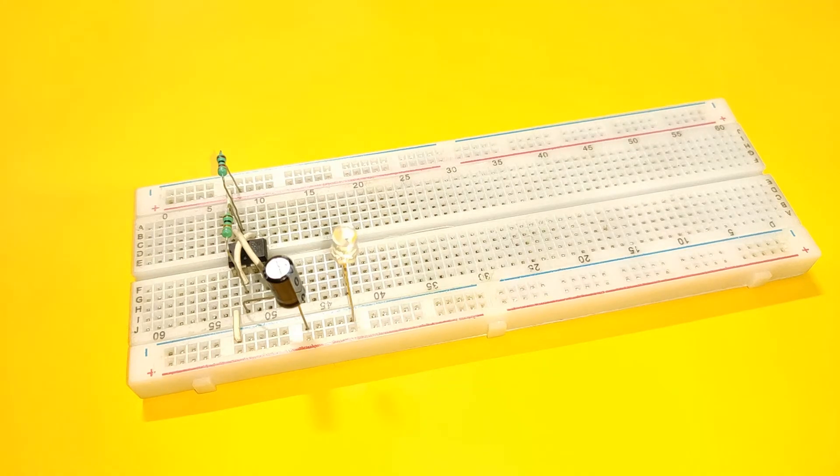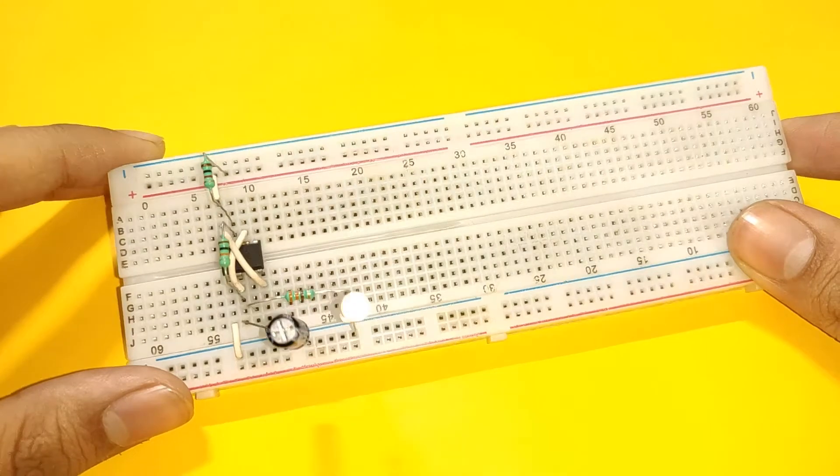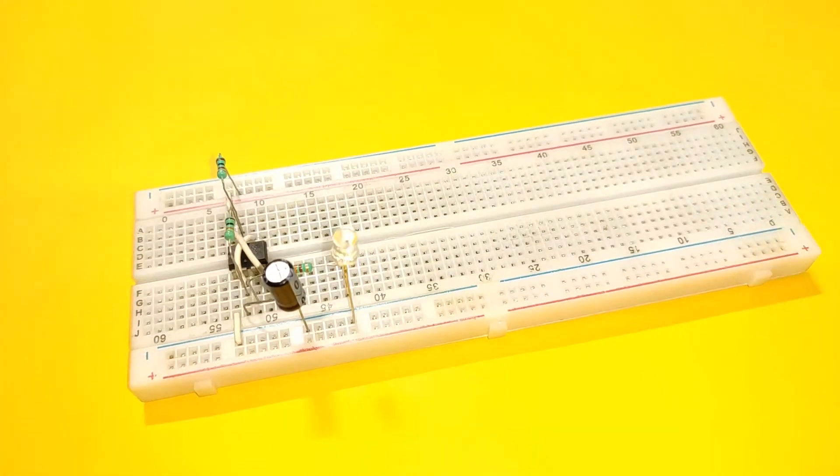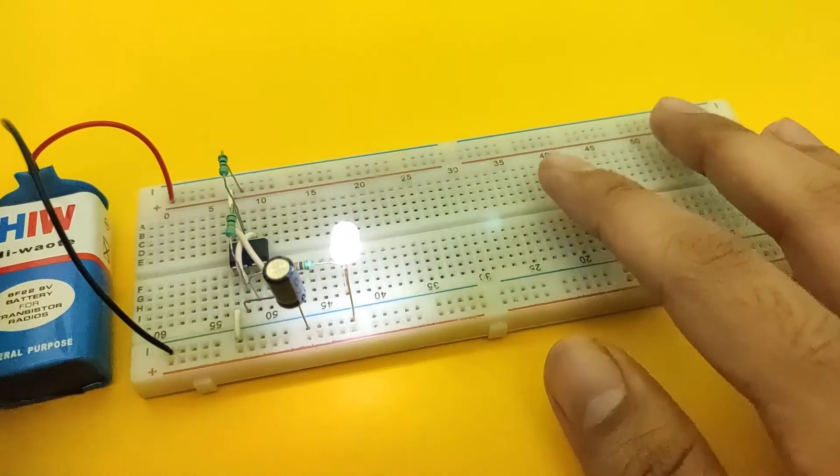Place a LED with its cathode connected to negative rail and anode connected to pin 3 of the IC via 330 ohm resistor. Finally, connect the power supply. With this, our circuit is complete.